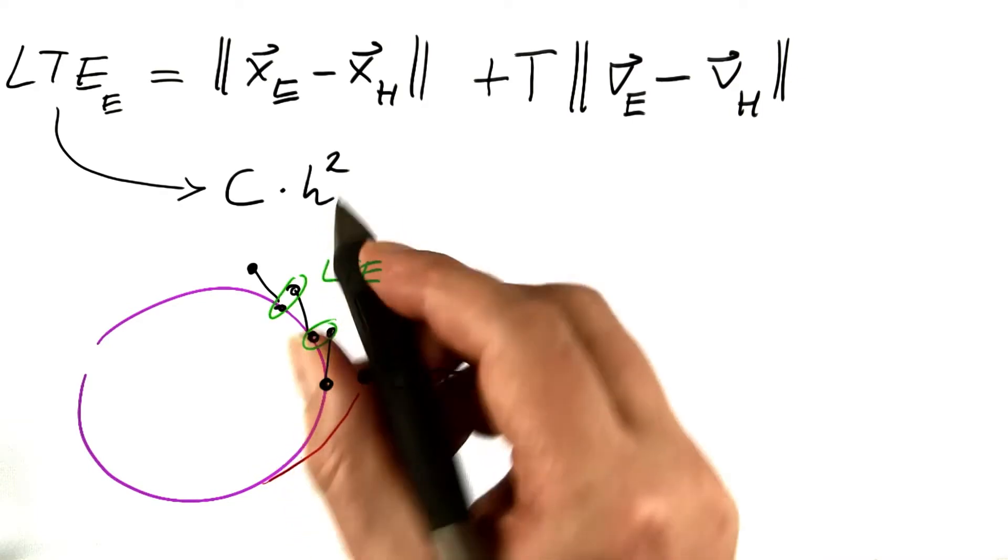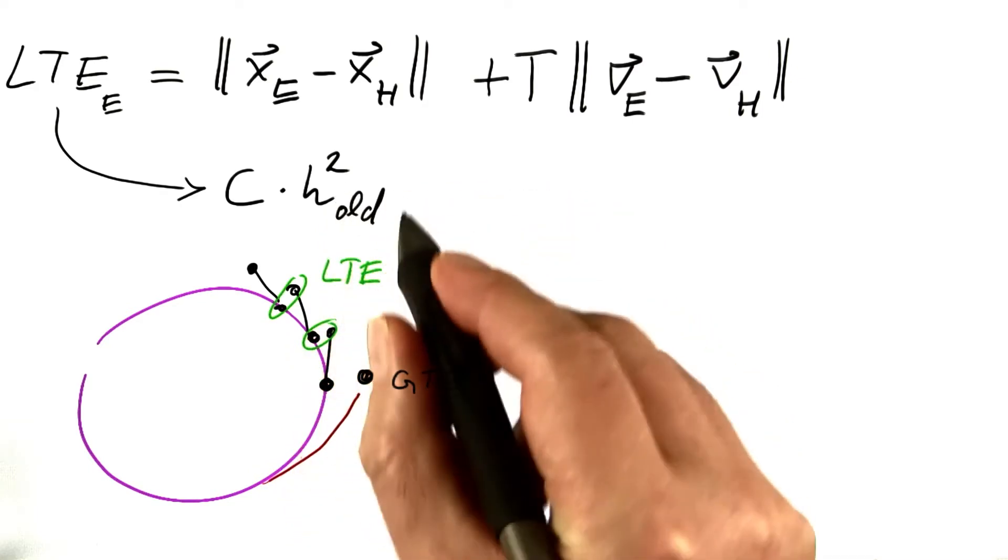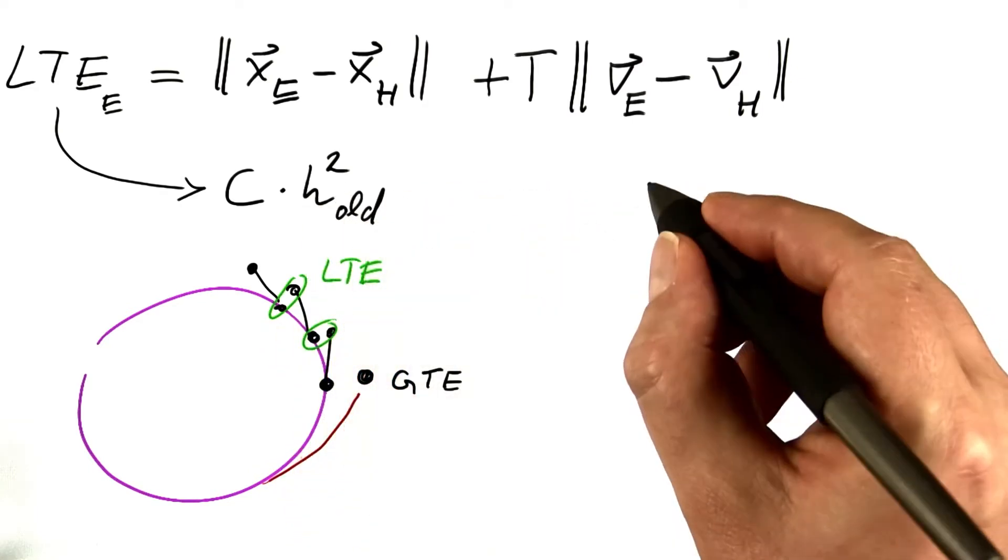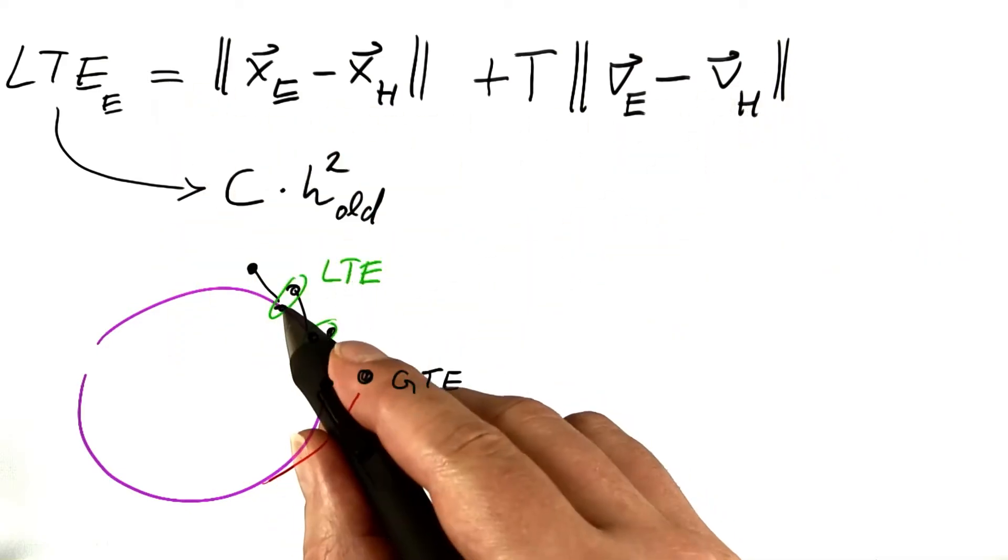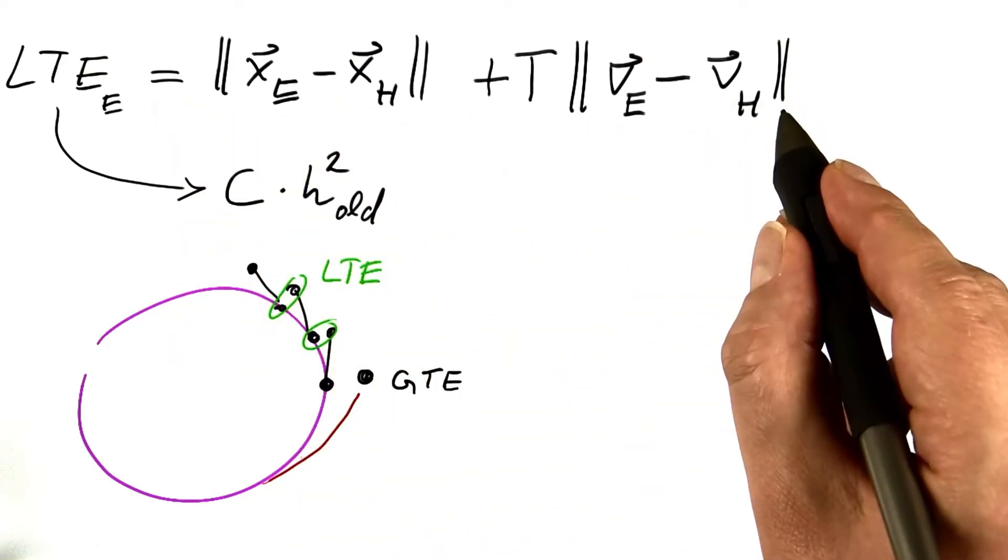Assume that I did the first step with some step size, whichever one I chose. But what I want is that this error, the local truncation error of Euler's method, is of a fixed size.